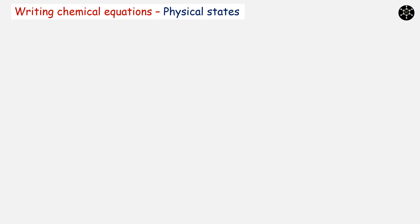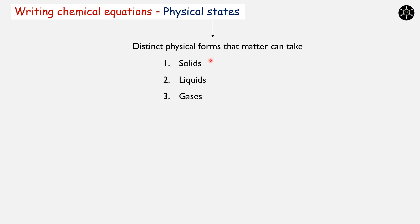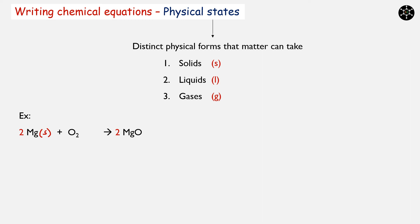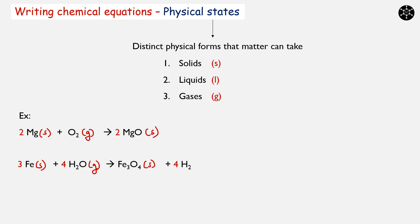While writing a chemical equation, it is also important to mention the physical states of reactants and products. Physical states mean distinct physical forms that matter can take — majorly solids, liquids, and gases — abbreviated as (s), (l), and (g) respectively. For the equation Mg + O₂ → MgO: magnesium is in solid form (s), oxygen is in gaseous form (g), and magnesium oxide is a solid (s). For the iron reaction: iron is solid (s), water is taken in gaseous form as steam (g), Fe₃O₄ is solid (s), and hydrogen is a gas (g).